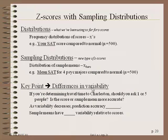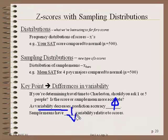The key point is there are going to be differences in variability. If you're determining the travel time to Charleston, should you ask one or five people? The score or the sample mean — which is more accurate? Most of us would assume that if we asked five people and got the average, we'd be better off. The rule of thumb is that as variability goes down, prediction accuracy goes up. Sample means will always have less variability relative to individual scores — we'd always be more accurate getting the mean from five people than from a single score.